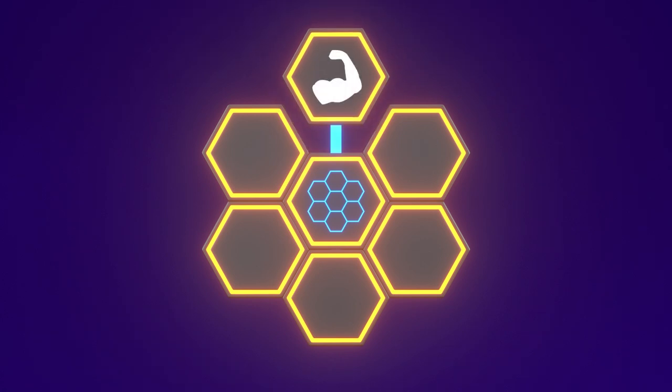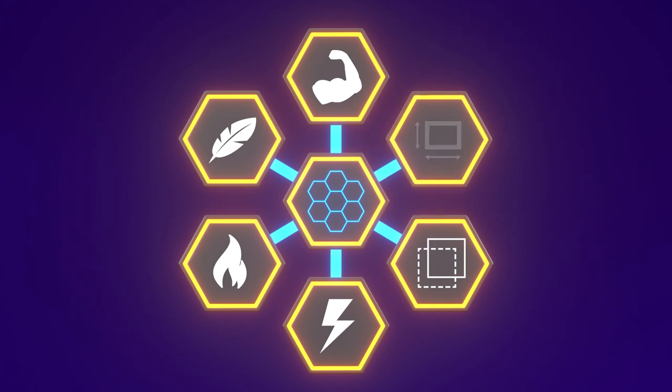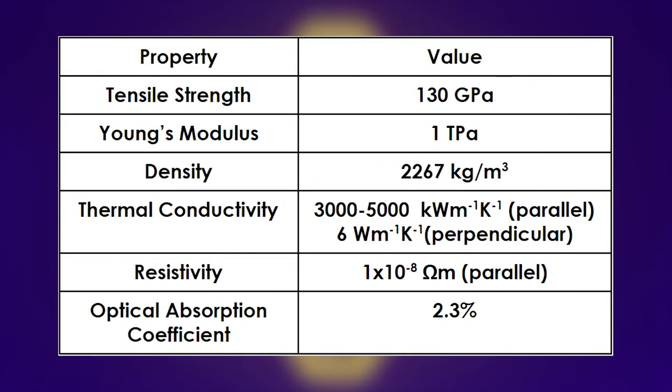In short, graphene is the strongest, lightest, most thermal and electrically conductive material. Let's investigate the properties of graphene and see how it compares to current leading materials.